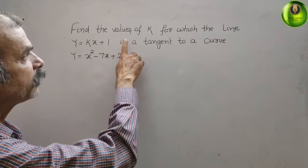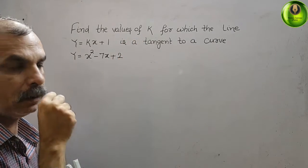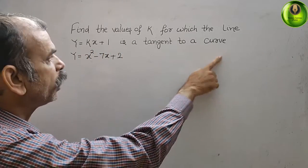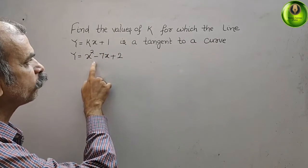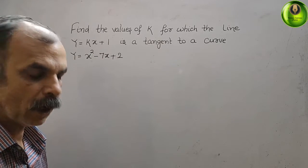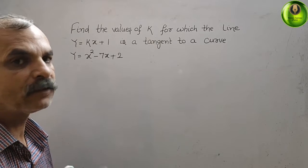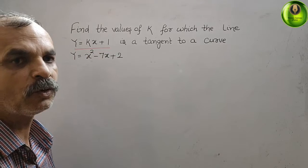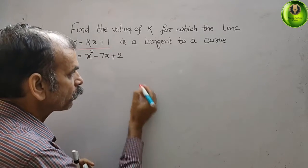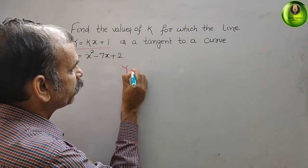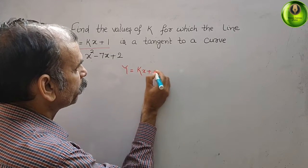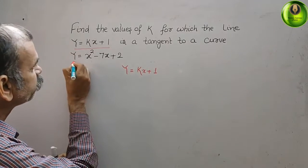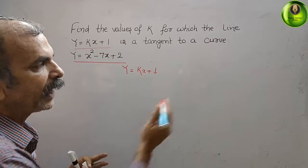The question is: find the value of k for which the line y = kx + 1 is a tangent to the curve y = x² - 7x + 2. We have the line y = kx + 1 on one side and the curve y = x² - 7x + 2 on the other.